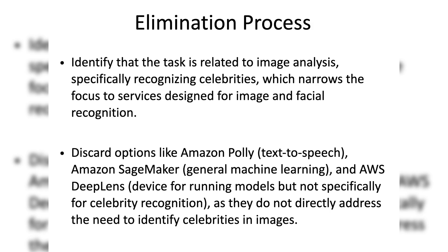To solve this question, the first step is to understand the purpose of each option and then eliminate ones that clearly don't fit. Identify that the task is related to image analysis — specifically recognizing celebrities — which narrows the focus to services designed for image and facial recognition. Discard options like Amazon Polly (text-to-speech), Amazon SageMaker (general machine learning), and AWS DeepLens (a device for running models), as they do not directly address the need to identify celebrities in images.